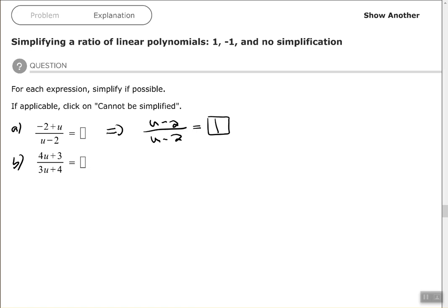We have, in part b, 4u plus 3 over 3u plus 4. Well, if we just even look here, those are completely different. We have 4 times u and 3 times u and then 3 and 4. Those are completely different. We cannot simplify that at all. So that would be cannot be simplified.